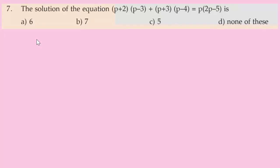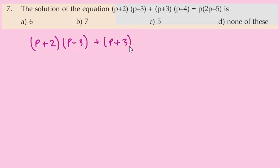Question number 7: the solution of the equation (P+2)(P-3) + (P+3)(P-4) = P(2P-5). We need to expand and solve.